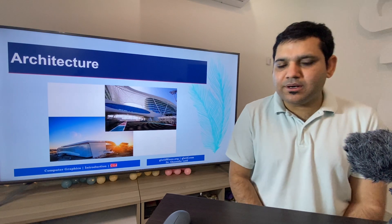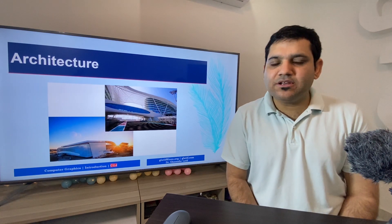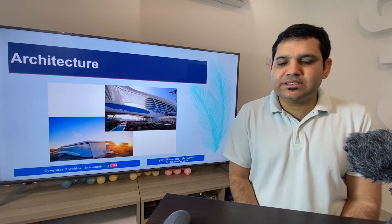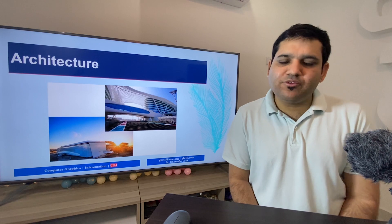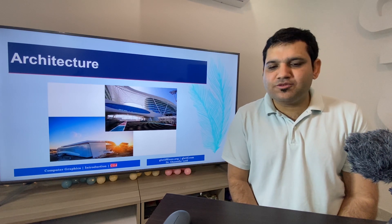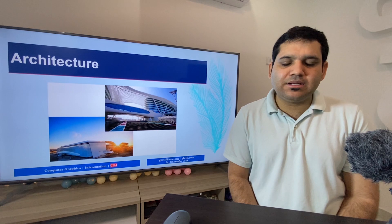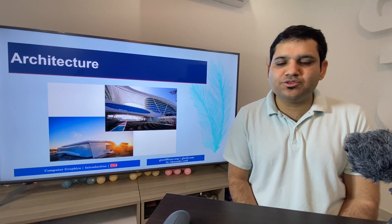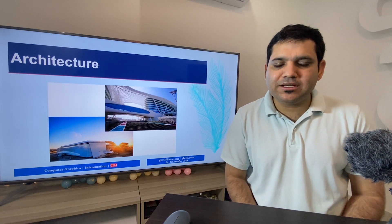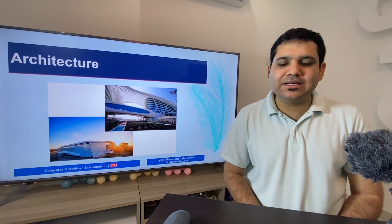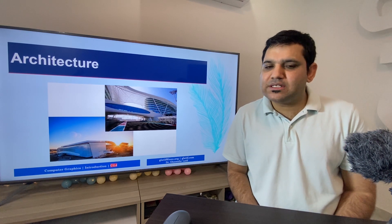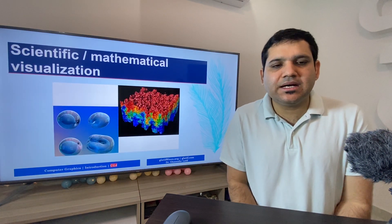Next is the architecture field, where computer graphics has been widely used. Nowadays, for making any new building, industrial zone, mall, or even a home, we contact an architecture designer who first makes a design of the building. After checking everything and making sure it meets requirements, the actual construction work is started.